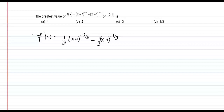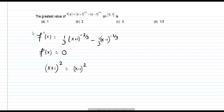For maximum and minimum values, we set f'(x) = 0. This gives us (x+1)^2 = (x-1)^2, and we simplify this case.